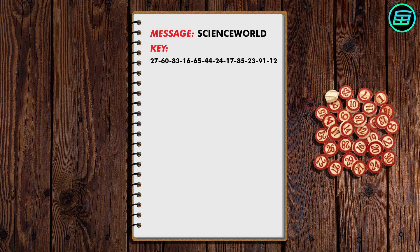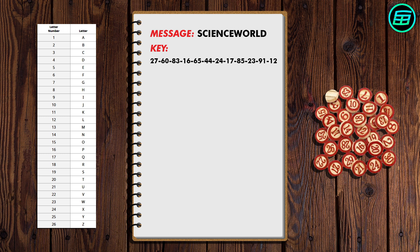Both sender and receiver must have this key to encrypt or decrypt the message. If we assign numbers to letters, for example A is 1, B is 2, C is 3, and so on, we can convert the letters of Science World into numbers.